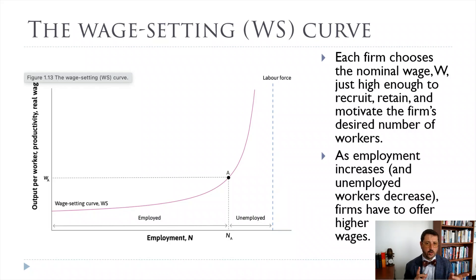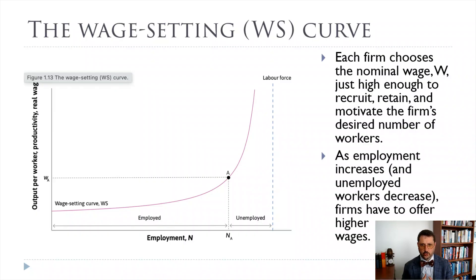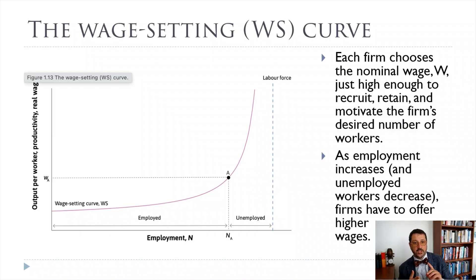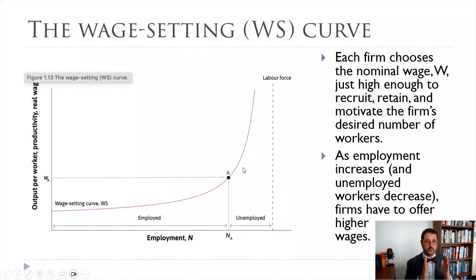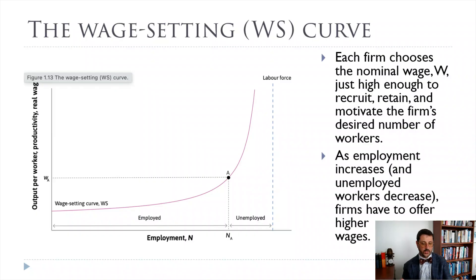We talked about productivity, profit, and the real wage in the last video. What we want to think about now is that sort of HR department — that part of the firm worried about getting workers to agree to work and show up and work hard so they can produce what they want. In order to get workers to work, firms are going to have to pay them a wage. And in order to find those workers and keep them motivated, they're going to have to pay a higher wage as the unemployment rate gets lower. When there are fewer and fewer unemployed workers, it's harder for firms to find workers, so they have to pay a higher wage.